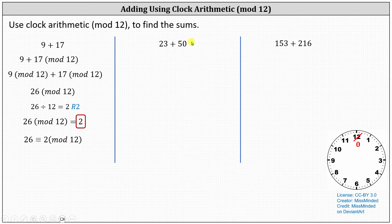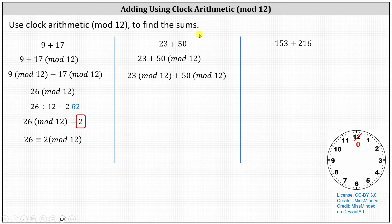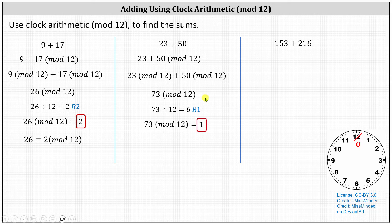Next, we have 23 plus 50, which we should write as 23 plus 50 mod 12, or 23 mod 12 plus 50 mod 12. We sum 23 and 50, which gives us 73 mod 12, which is equal to the remainder when 73 is divided by 12. 73 divided by 12 is equal to 6 with a remainder of 1. Because the remainder is 1, 73 mod 12 equals 1, which is our answer. We can also state that 73 is congruent to 1 mod 12.